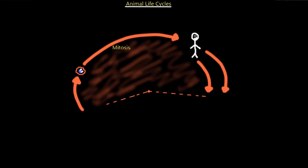The first thing we're going to talk about is the animal life cycle. We've discussed this previously in the process of meiosis and mitosis, but we're going to go over it again since this topic comes up more specifically in this section. What we begin with is a zygote. Zygotes are simply fertilized cells — the sperm fertilizes the egg — and it becomes a zygote, which is a diploid structure, 2n.